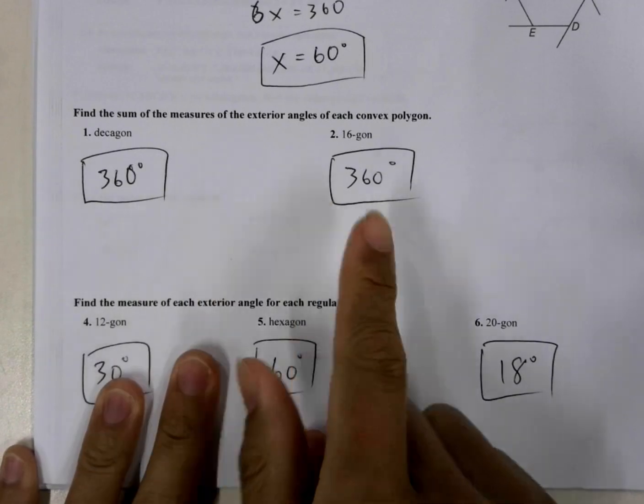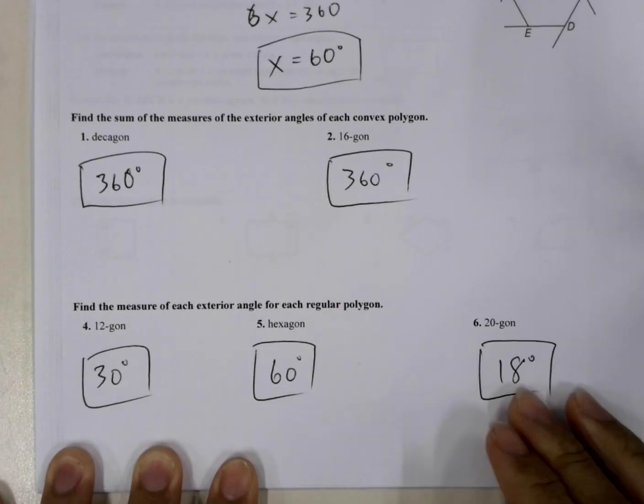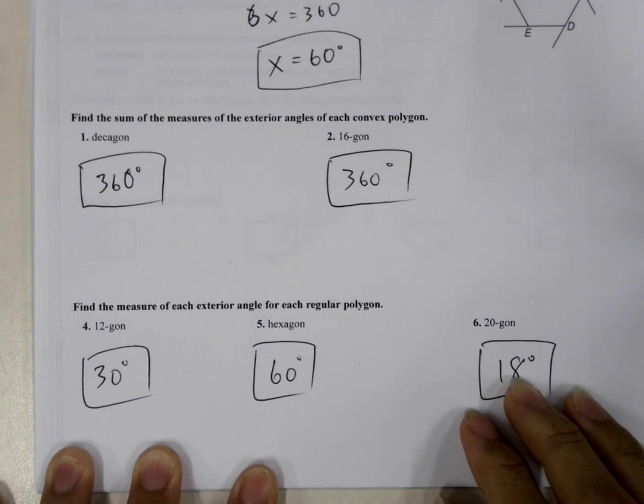So for this one, it's 360 as well. And then they give us the number of sides, and they say find the measure of each exterior angle.